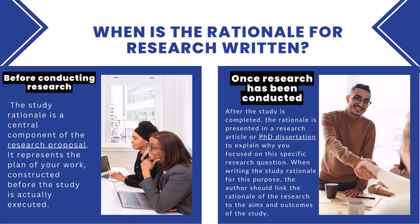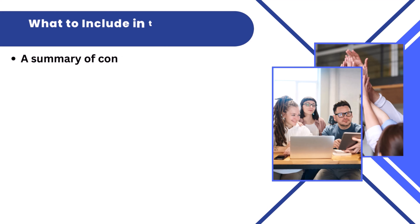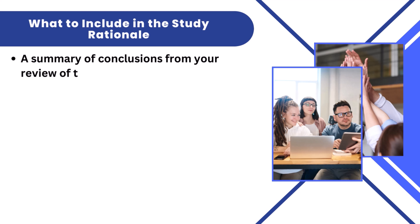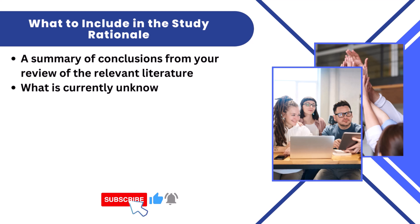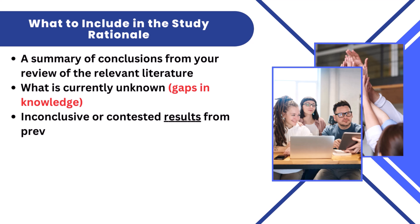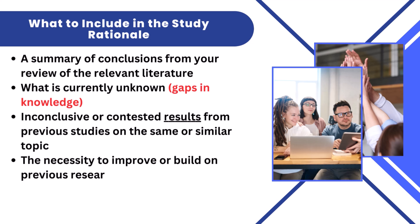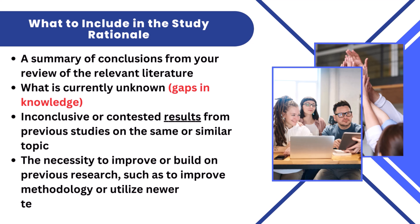When writing the study rationale for this purpose, the author should link the rationale of the research to the aims and outcomes of the study. What to include in the study rationale: although every study rationale is different, there are some elements that should be included. Make sure to touch on: a summary of conclusions from your review of the relevant literature, what is currently unknown, gaps in knowledge, inconclusive or contested results from previous studies on the same or similar topic.